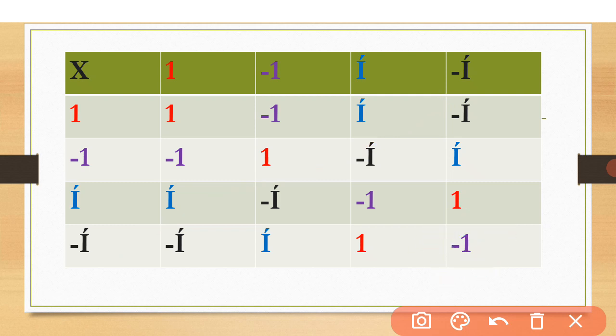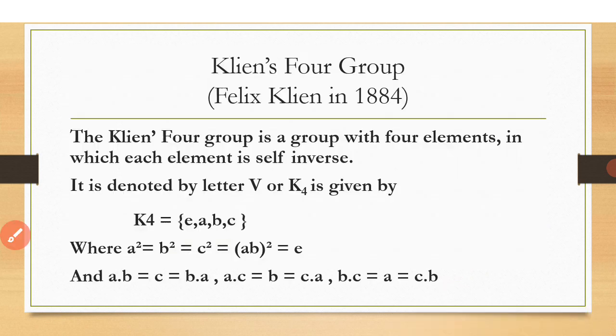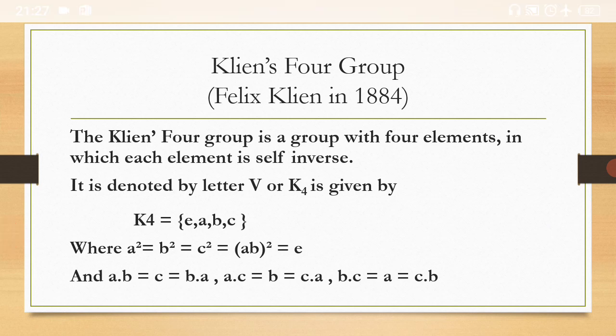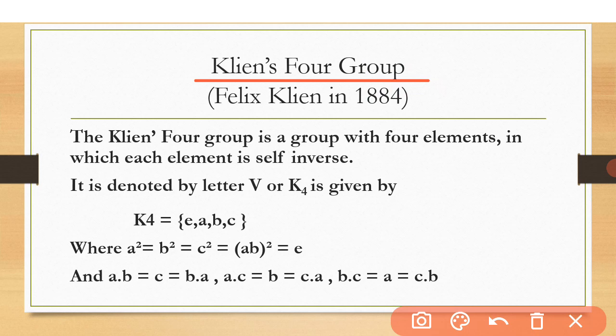In this way we make tables of many groups, and these types of tables are called Cayley tables. Our next topic is Klein-4 group — a very important group in group theory.